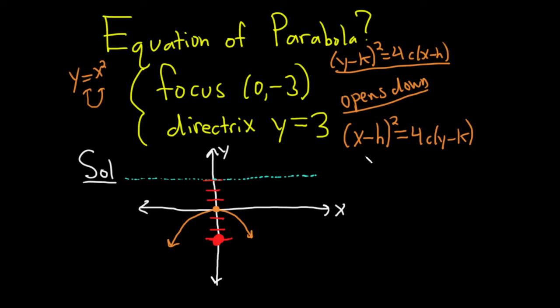Those go away, so you just get X minus zero squared equals 4C Y minus zero. So this is X squared equals 4C Y.